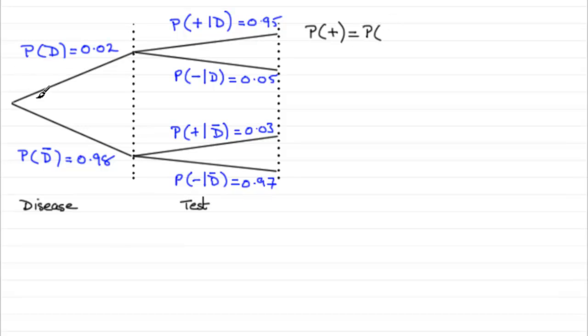So the probability of testing positive would be that they can have the disease and be positive, and you'd write that like this if you're using symbolic notation, or they could not have the disease and test positive.